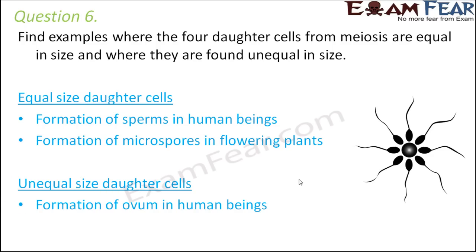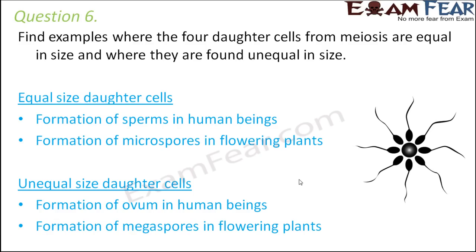Unequal size daughter cells — formation of ovum in human beings: the female egg cells produced are not all equal in size. The ovum is the largest and is considered the egg; the remaining form polar bodies. Similarly, in flowering plants, megaspores are not all equal in size.